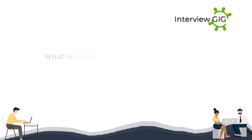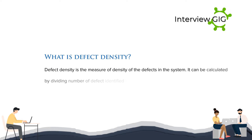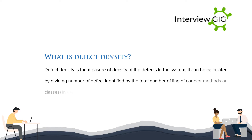What is defect density? Defect density is the measure of density of the defects in the system. It can be calculated by dividing the number of defects identified by the total number of lines of code, methods, or classes in the application or program.